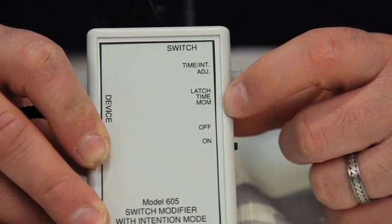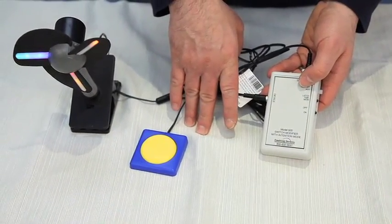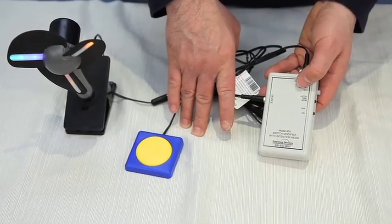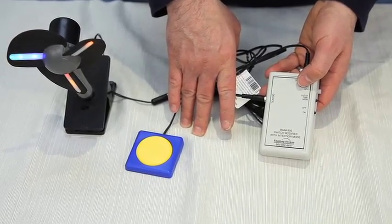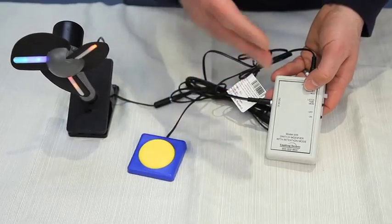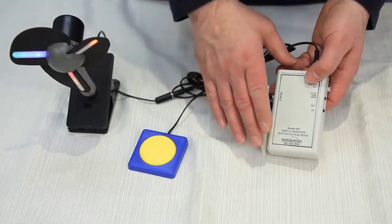Time will allow you to run a connected device anywhere from one second up to two minutes. Whereas once that time or duration that's been set runs out the device will shut off. You'll have to reactivate your switch in order for it to resume and it will run for that same amount of duration before it shuts off.